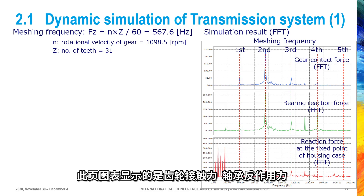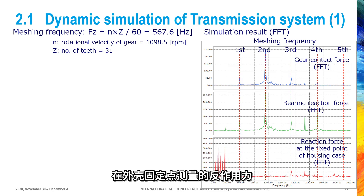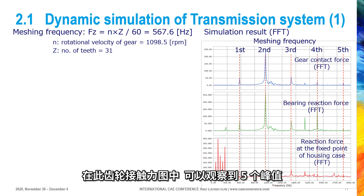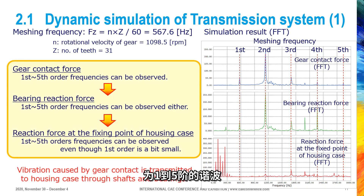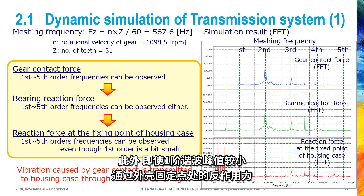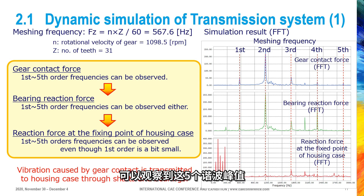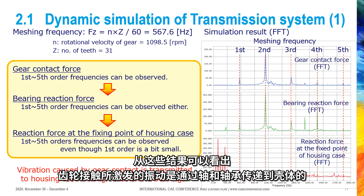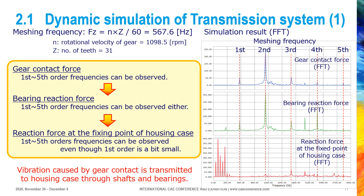The FFT result graph shows gear contact force, bearing reaction force, and reaction force at the fixed point of the housing case. In the gear contact force result, five peaks can be observed which are harmonics of first to fifth orders. These five peaks at harmonic frequencies can also be observed for bearing reaction force. Additionally, these five peaks of harmonics can be observed for reaction force at the fixed point of the housing case, even though the peak of the first order is a bit small. From these results, it is clear that vibration excited by gear contact is transmitted to the housing case through shafts and bearings.